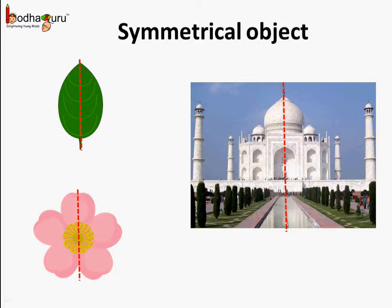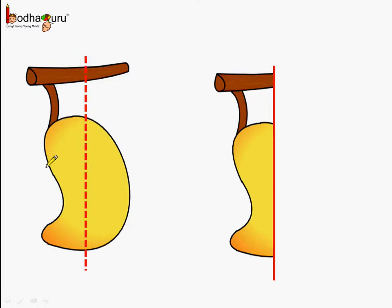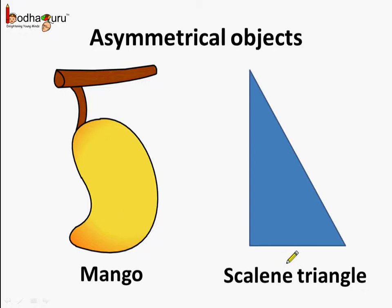Now, can you tell — is this shape symmetrical in nature? Let's try to do it. If we take the two halves of this mango, this is the half. Now, if we make an exact copy on the right side, what do we get? This doesn't look like a mango. So we can say this image is not symmetric. Objects like mango and scalene triangle, where we cannot divide into two halves that are exactly identical to each other, are called asymmetrical objects. The mango image is asymmetric and the scalene triangle is asymmetric in nature.